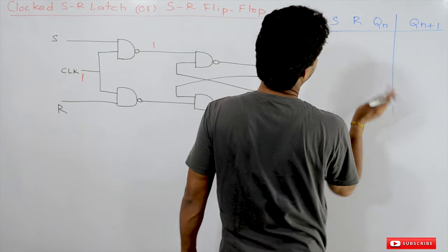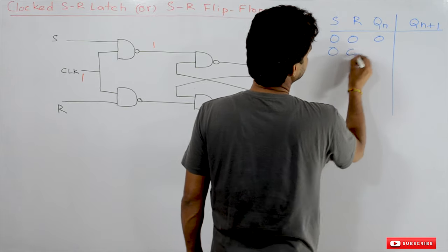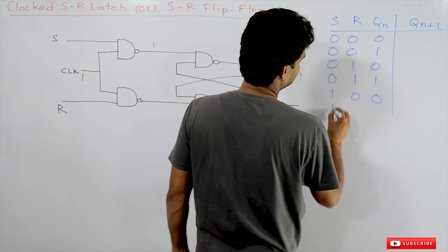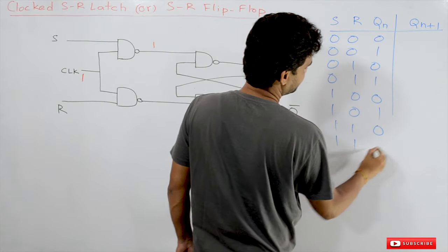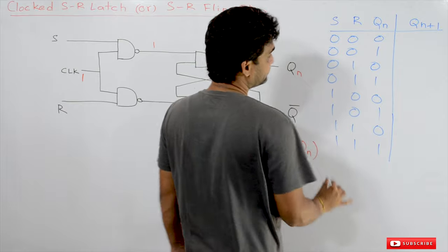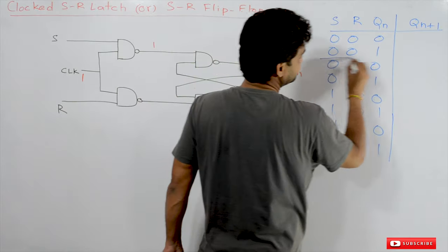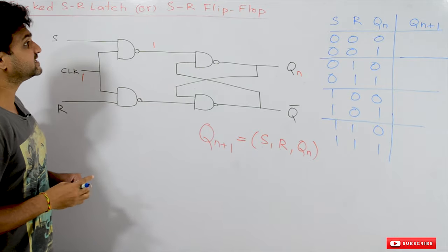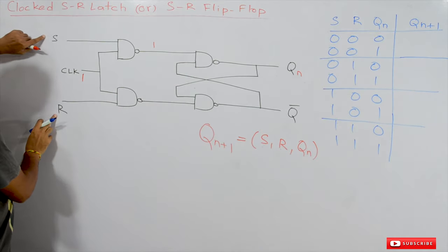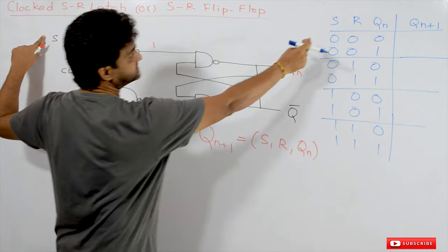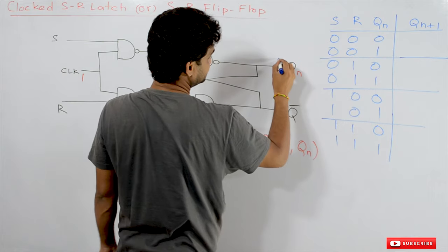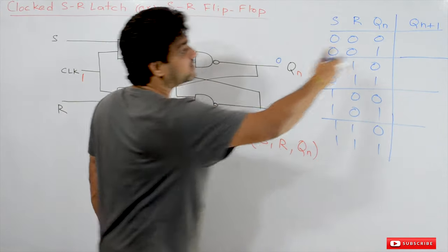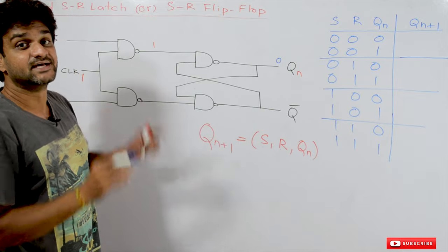Now we will try to see each and every combination of these inputs: S=0, R=0, Qn=0; S=0, R=0, Qn=1; S=0, R=1, Qn=0; S=0, R=1, Qn=1; S=1, R=0, Qn=0; S=1, R=0, Qn=1; and S=1, R=1, Qn=0 and Qn=1. When S=0, R=0, and clock=1, the NAND gates receive inputs 0 and 1, producing outputs of 1. This gives the NAND SR latch both inputs as 1, which is the memory state, so the output Qn+1 remains the same as Qn=0.